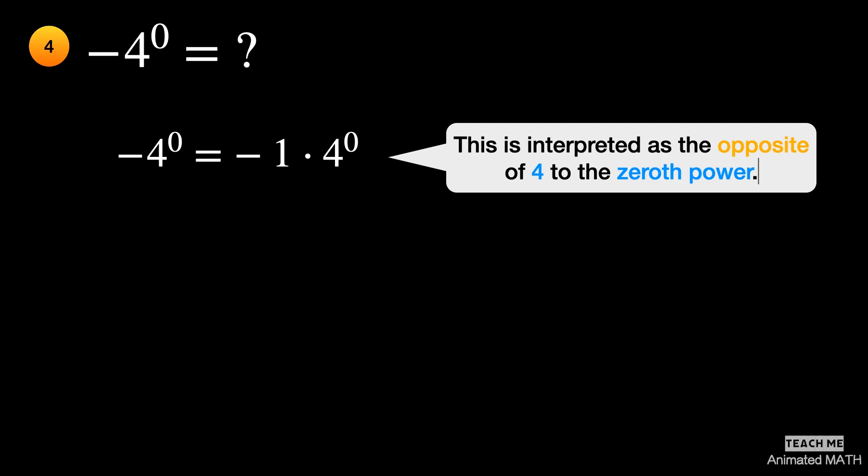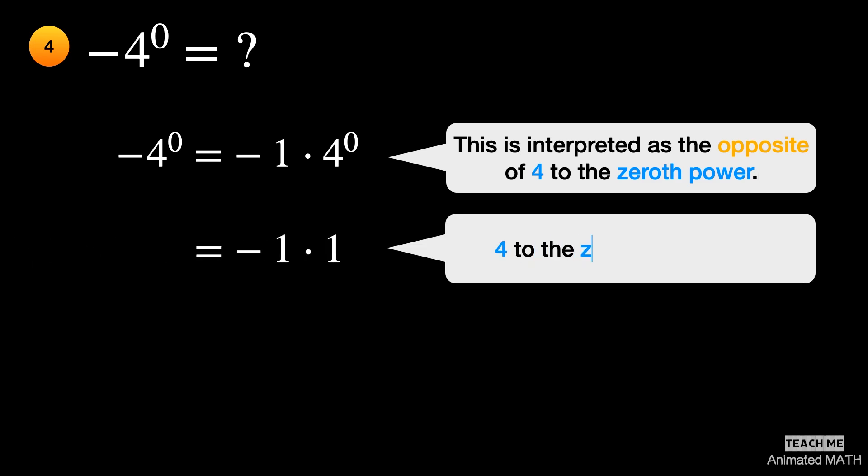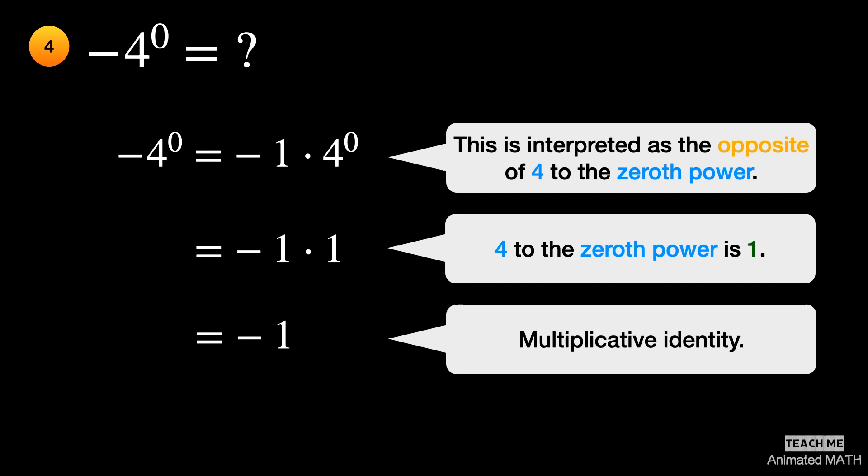So, 4 to the zeroth power is 1, and the product of negative 1 and 1 is equal to negative 1.